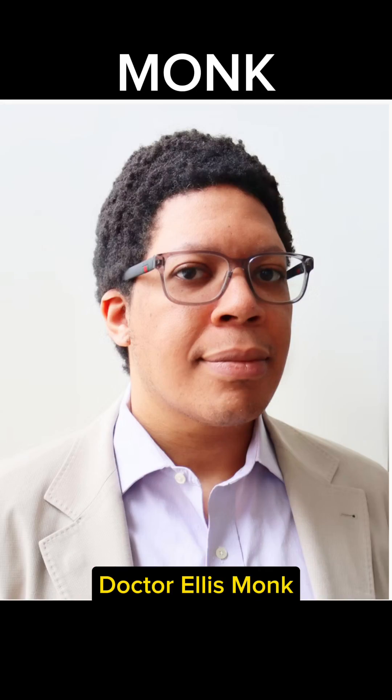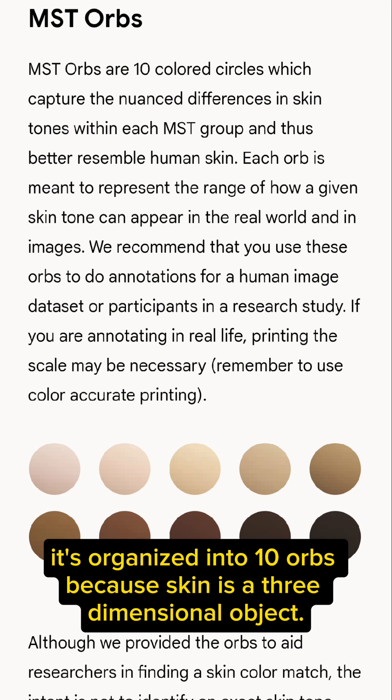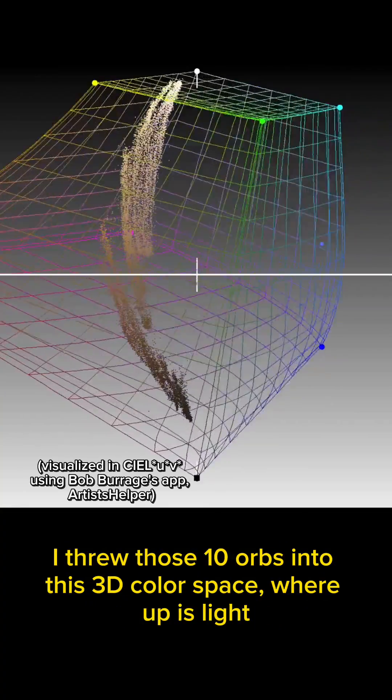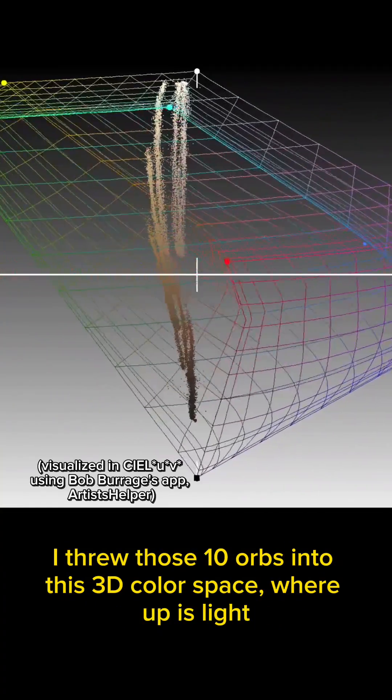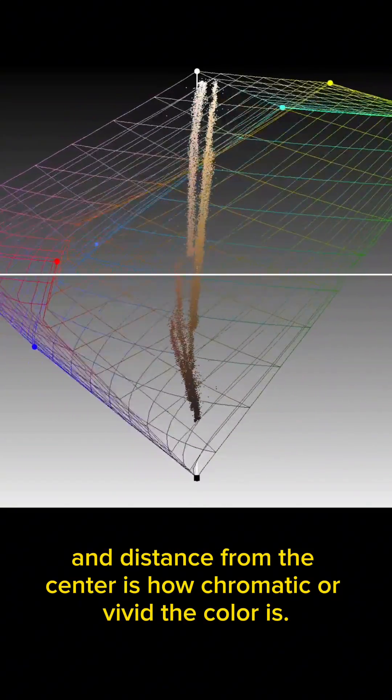Dr. Ellis Monk was tapped by Google to develop the Monk Skin Tone Scale. It's organized into 10 orbs because skin is a three-dimensional object, and I threw those 10 orbs into this 3D color space where up is light, down is dark, and distance from the center is how chromatic or vivid the color is.